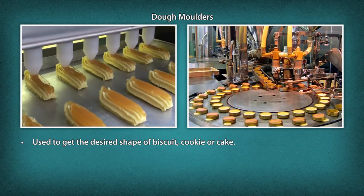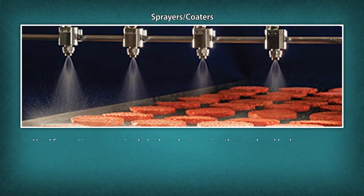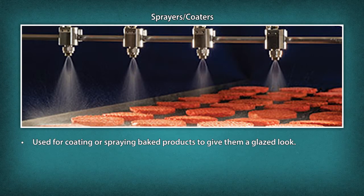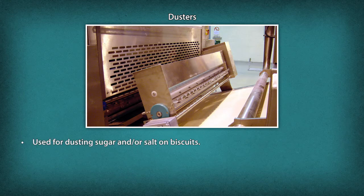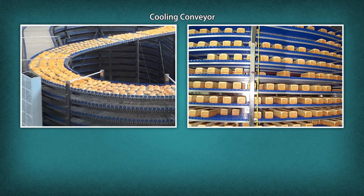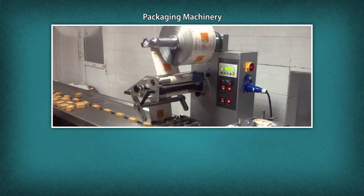Dough Molders: used to get the desired shape of biscuit, cookie or cake. Sprayers and Coaters: used for coating or spraying baked products to give them a glazed look. Dusters: used for dusting sugar and/or salt on biscuits. Cooling Conveyor: used for cooling baked products. Packing Machinery: used for packaging finished products.